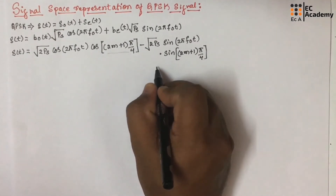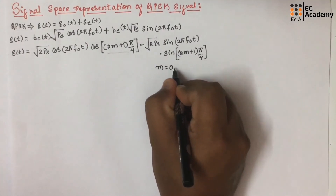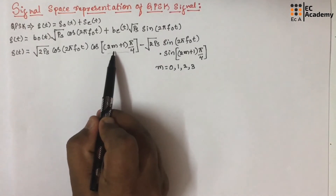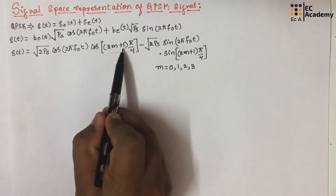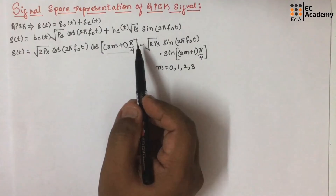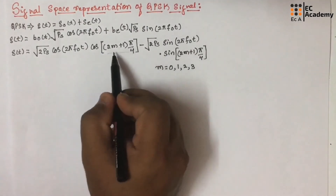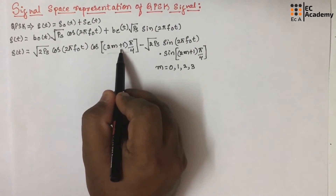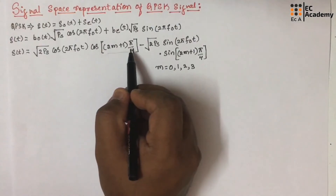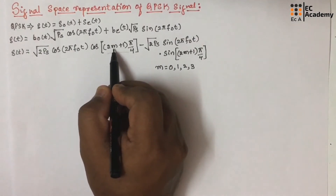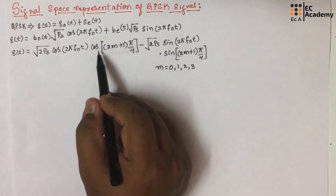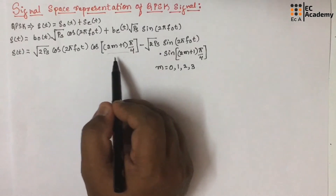Here m can take the values 0, 1, 2, and 3. If m=0, we get cos(π/4). If m=1, it is 3π/4. If m=2, it is 5π/4. And if m=3, it is 7π/4. So these represent the phase shifts of the carrier signal for each combination of bits. In the same way, we have written it for the sine wave term.